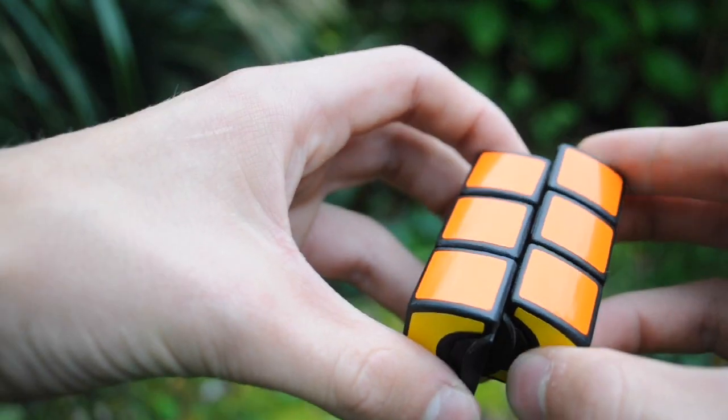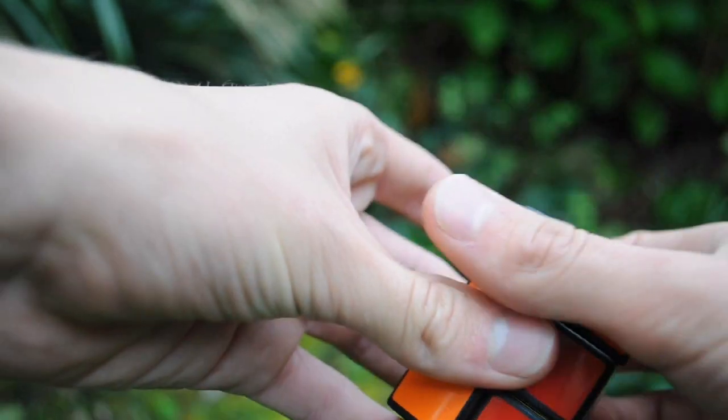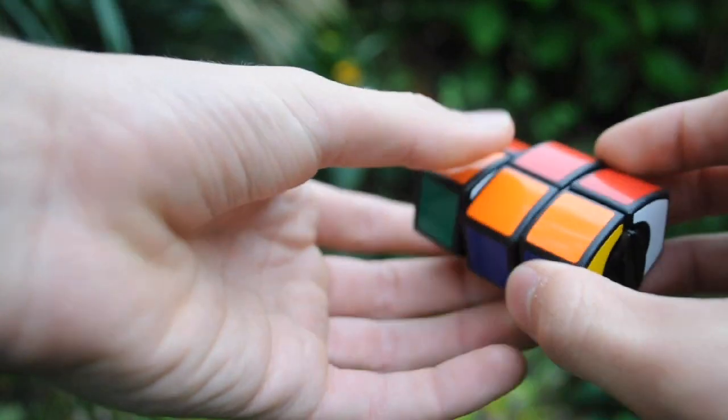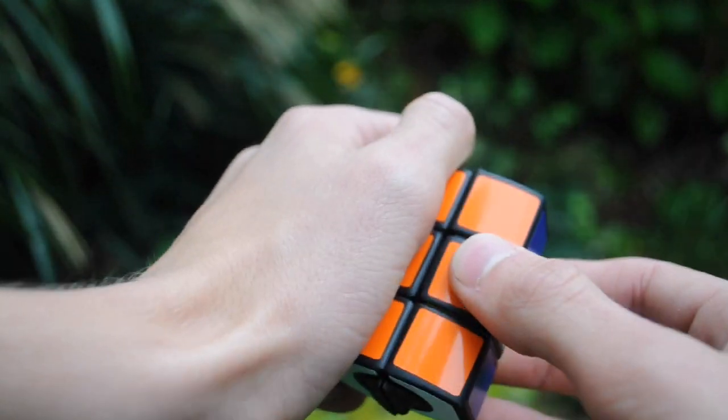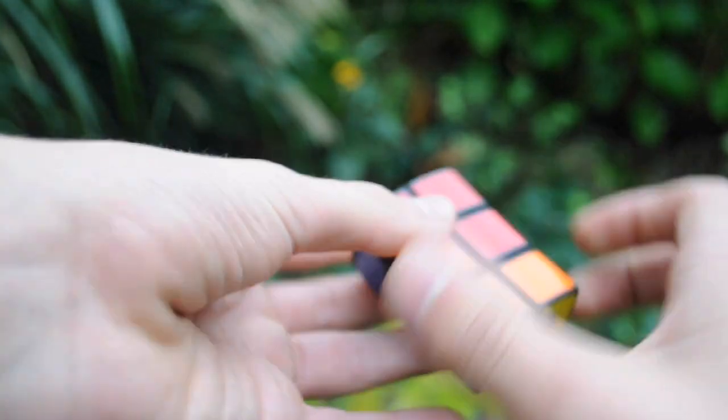If you didn't see the first video, it turns like a regular 1x2x3, so you have movement like that, like that, like that maybe. I don't know. So it can turn like that.